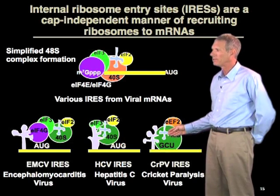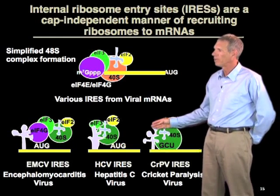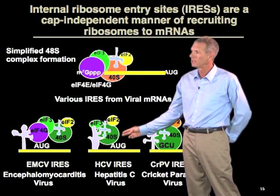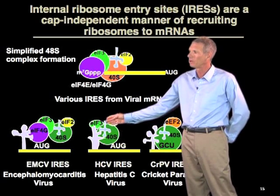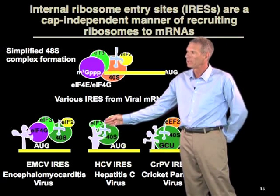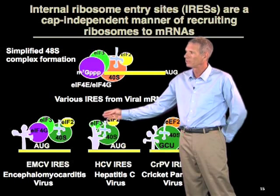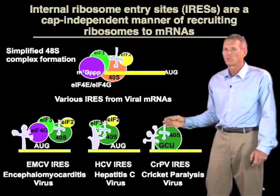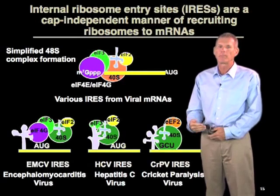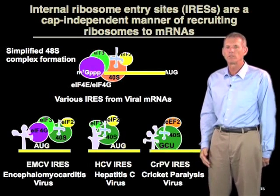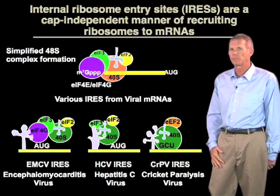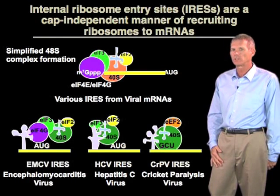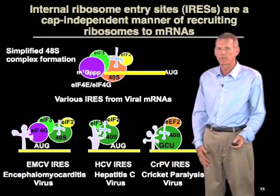There are a wide variety of these types of IRES elements. For example, in hepatitis C virus, this IRES exists which recruits the ribosome, but does so using one of the initiation factors present in the normal canonical complex. We should expect that many cellular mRNAs include features like internal ribosome entry sites, and one ongoing area of research is describing those in eukaryotic mRNAs.